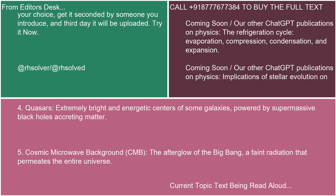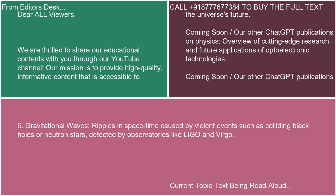Fifth, the cosmic microwave background (CMB): the afterglow of the Big Bang, a faint radiation that permeates the entire universe. Sixth, gravitational waves: ripples in space-time caused by violent events such as colliding black holes or neutron stars, detected by observatories like LIGO and VIRGO.